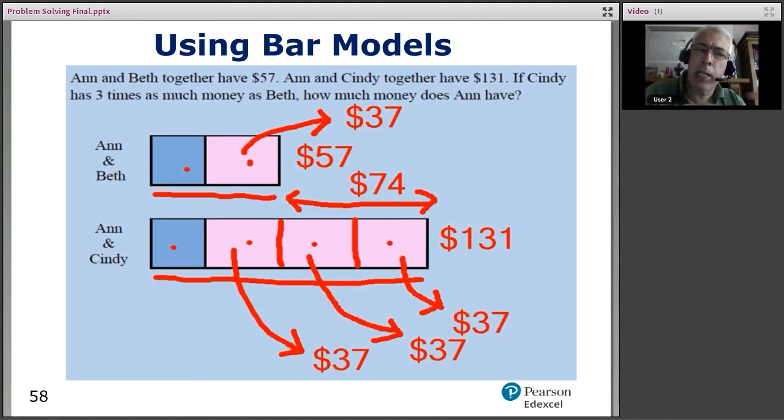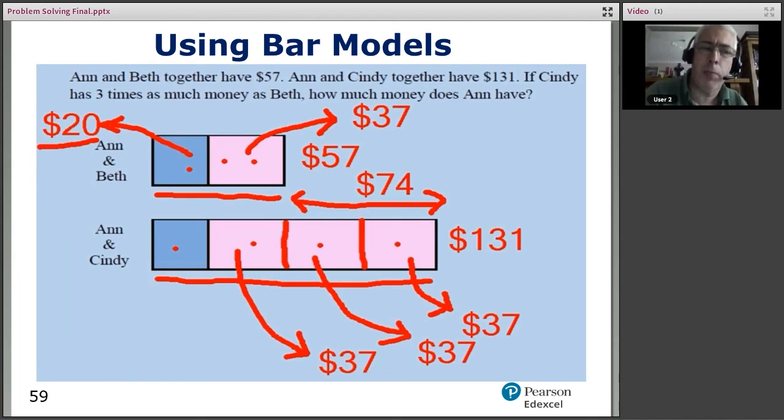So if you were doing this algebraically, you'd see some subtraction of the equations, and you'd see a 37 appear, and you'd see a 74 appear, and then you make a substitution at the end, and there's your 20. So it's actually quite a nice way of doing simultaneous equations.